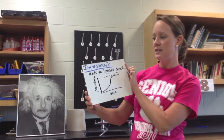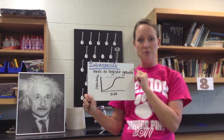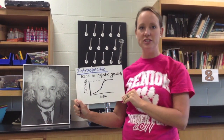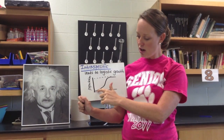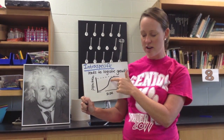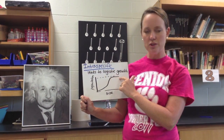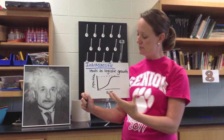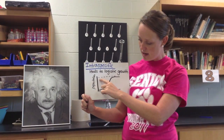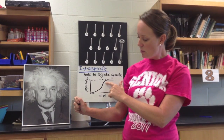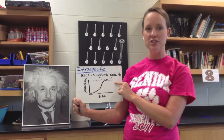Looking at intraspecific competition — competition between members of the same species — this can lead to logistic growth, which starts off exponential. We see our J curve. But once resources reach carrying capacity, because there's a limited amount of resources in that ecosystem, we see the population level out.